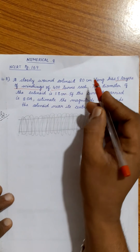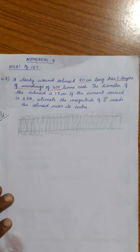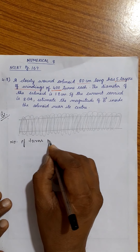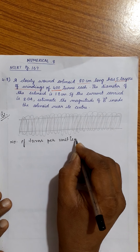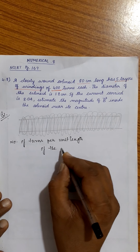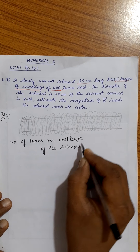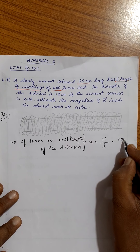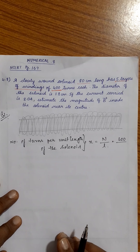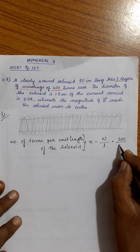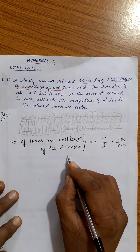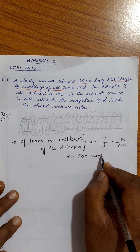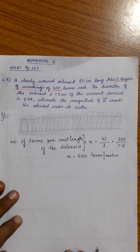The length of the solenoid is 80 centimeters and the number of turns is 400. I will calculate the number of turns per unit length. Small n equals the total number of turns divided by the length of the solenoid: 400 divided by 0.8 meters, which gives 500 turns per meter.